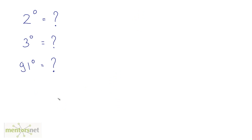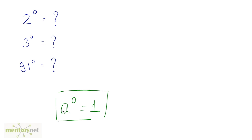Anything raised to 0 is equal to 1 — this is a standard law. So a raised to 0 equals 1. For example, 2 raised to 0 equals 1, 3 raised to 0 equals 1, and 91 raised to 0 equals 1. So anything raised to 0 is 1.